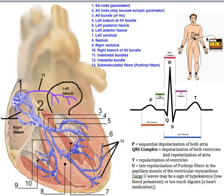At the same time, the impulse from the SA node is also transmitted via the internodal fibers through the right atrium to the AV node. Again, internodal is easy to remember: between the nodes — so between the SA node (number one) and the AV node (number two).